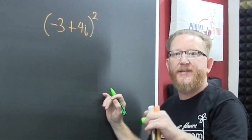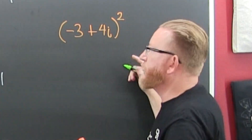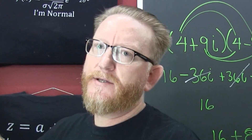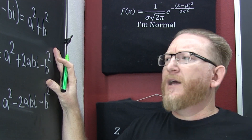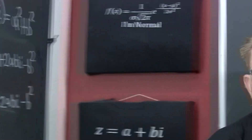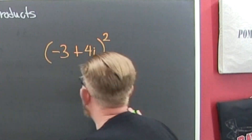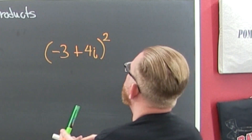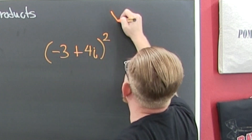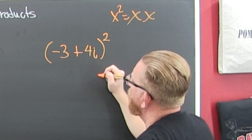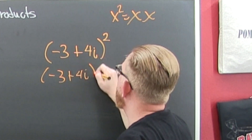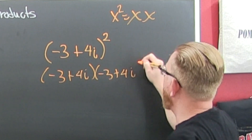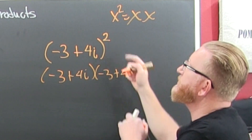Your book might not even have complex special forms, so let's just do it the standard way. When you see x², that's x times x. So this is minus three plus four i, times minus three plus four i — write it out so you don't miss terms when you FOIL.